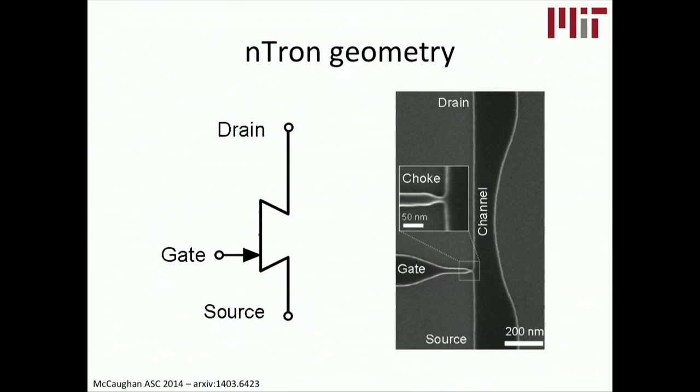We built a geometry around this effect to actually exploit it. And what you see here are the three terminals in the device diagram, where you have a drain, a source, and a gate. And specifically, the area that the hot spot is created is in this choke region that was illuminated in the last slide. When the choke hot spot is created, it affects the superconductivity in the channel. And I'm going to show you how that is exactly in the next steps.